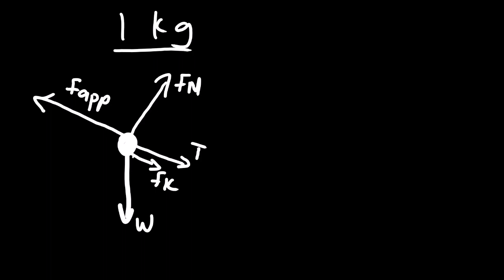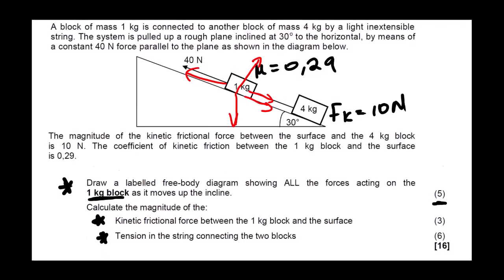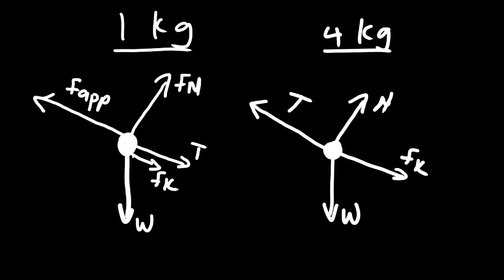Now let us quickly look at the 4 kg block. How many forces are acting on this? We have weight, we have normal force, we have kinetic friction, and then we have tension. So this is the actual free body diagram for the 4 kg block.